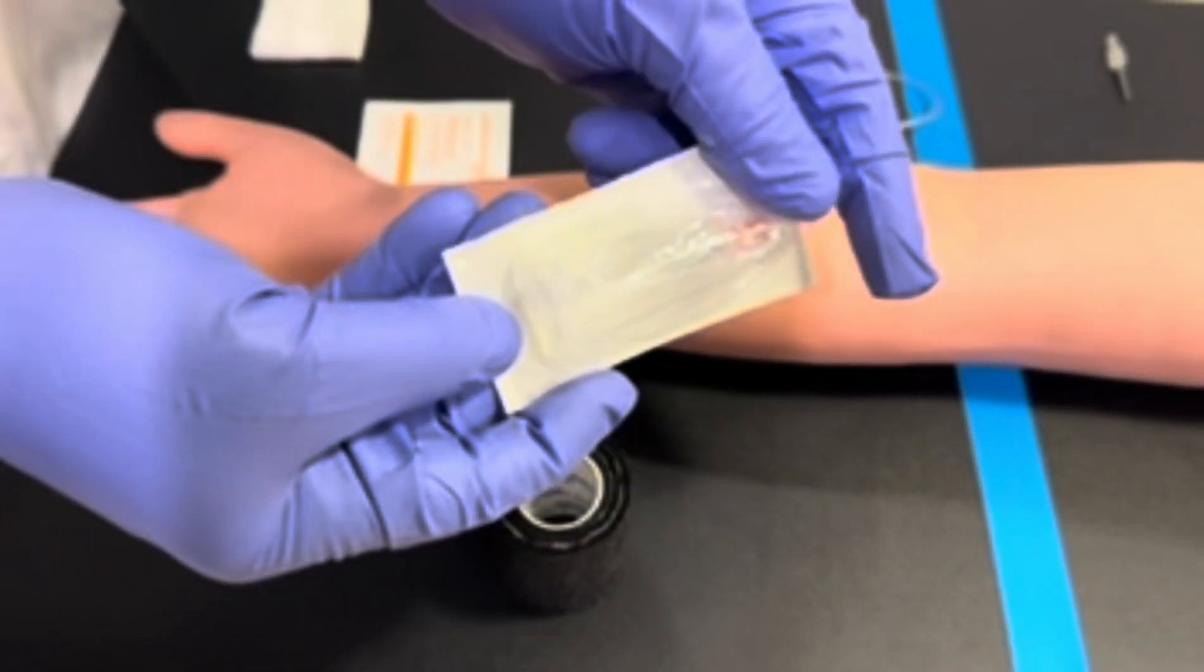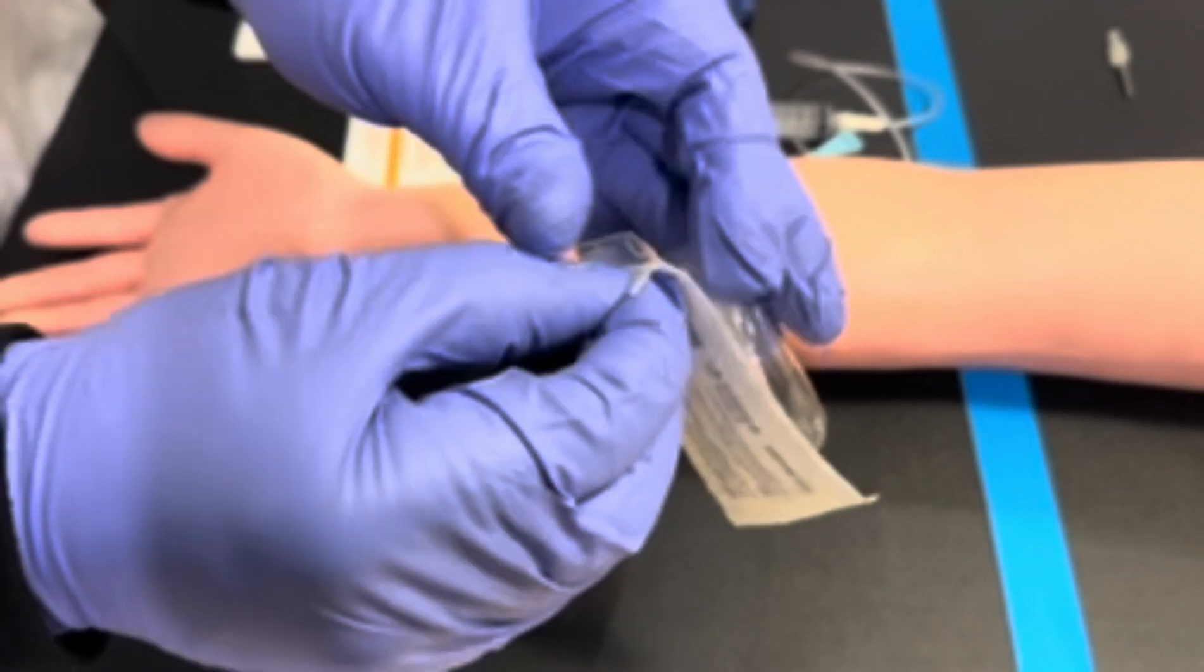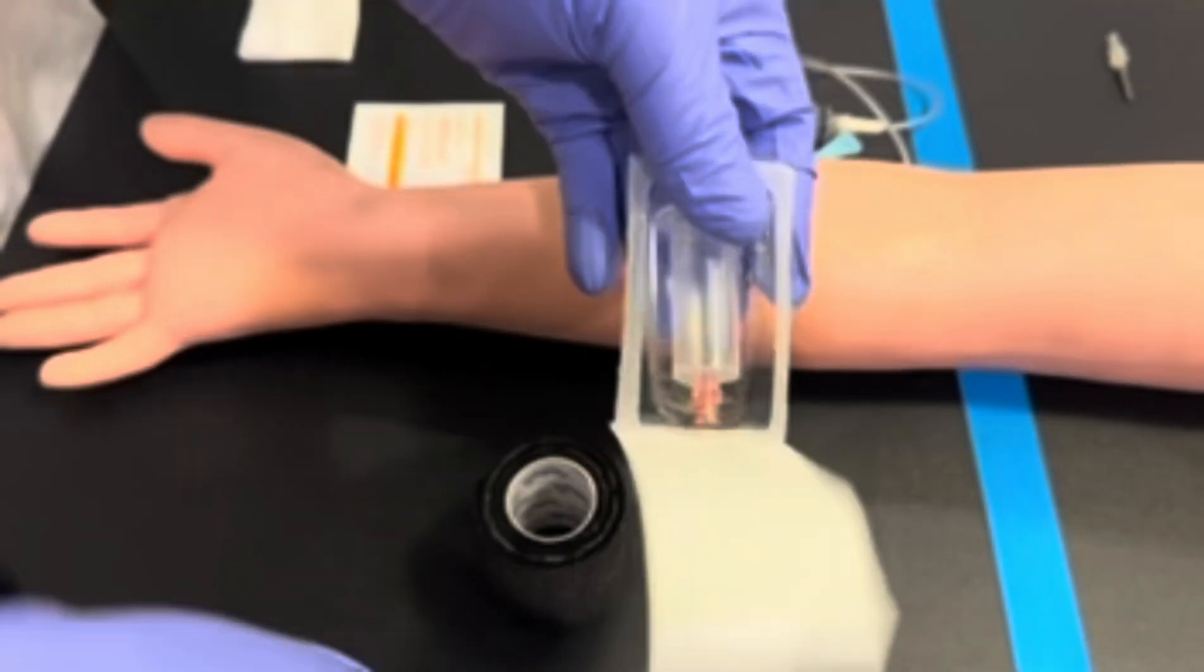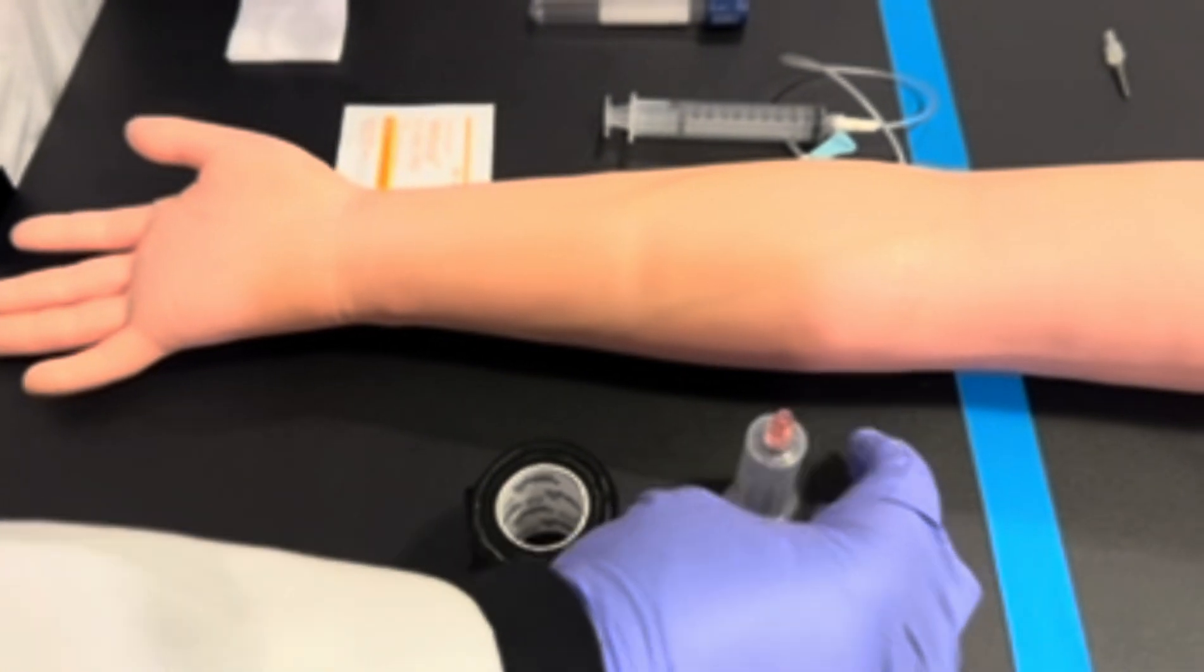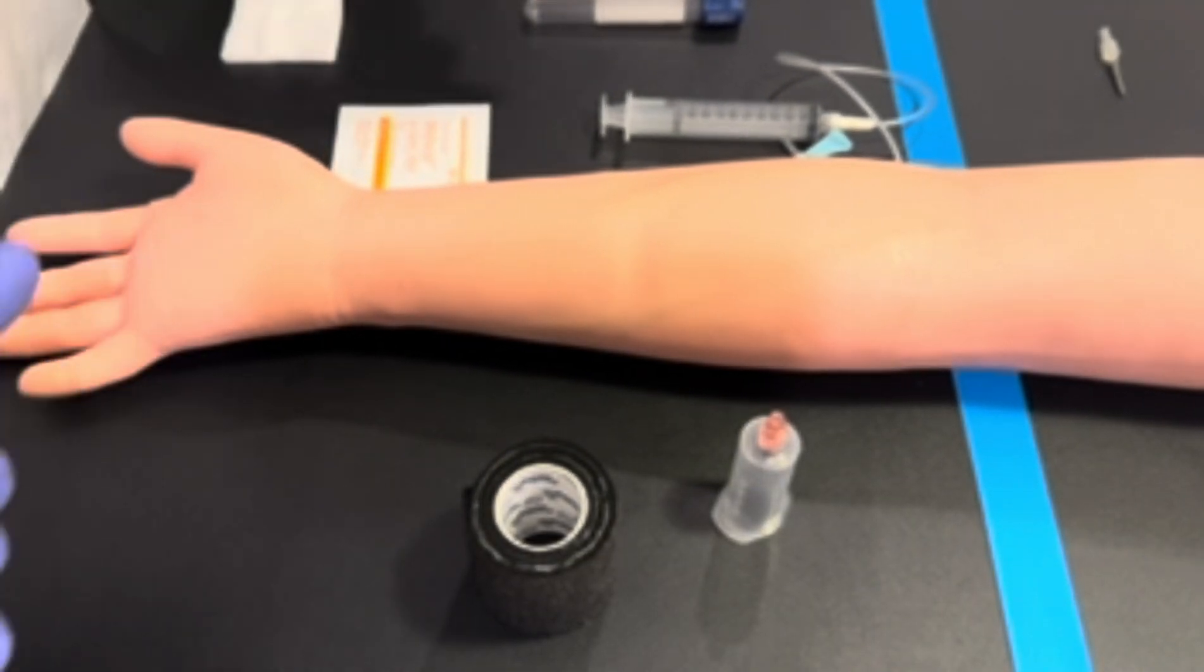We will use a transfer device to transfer the blood from the syringe into our vacutainer tube after successfully performing the venipuncture.